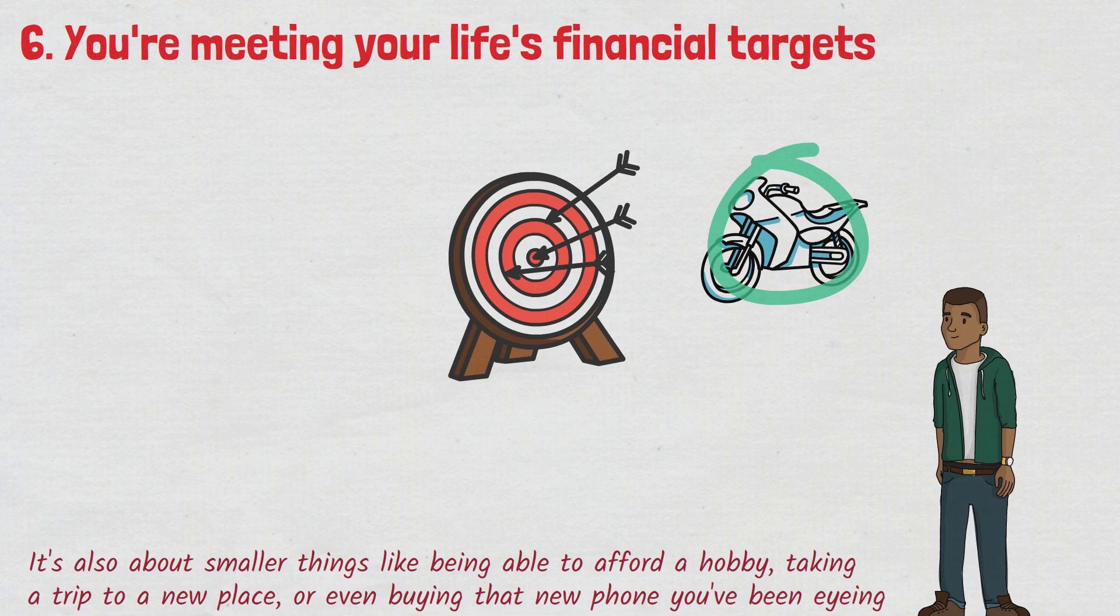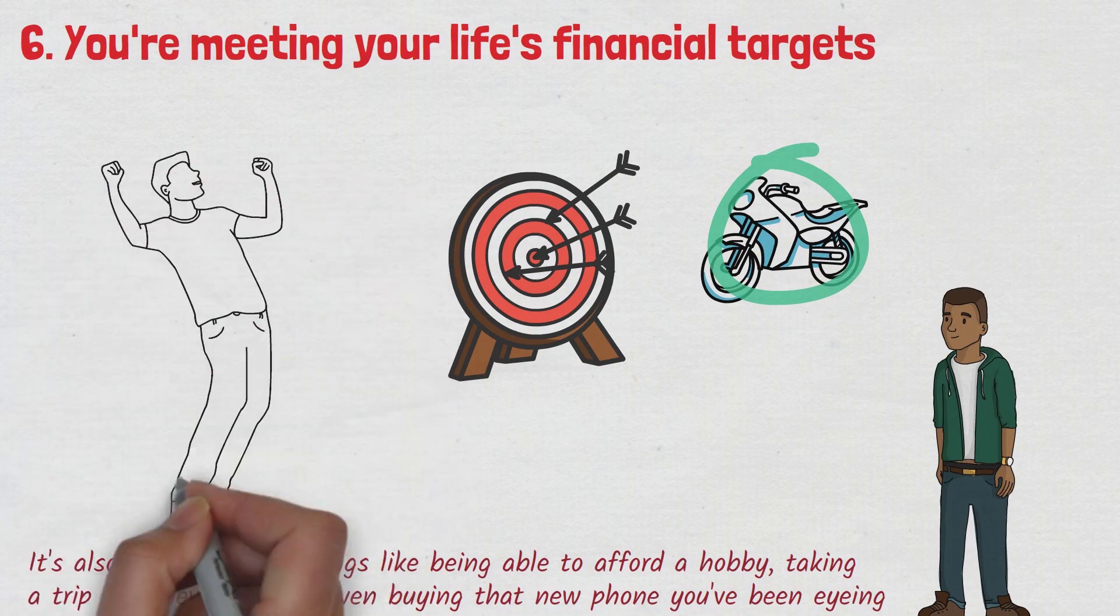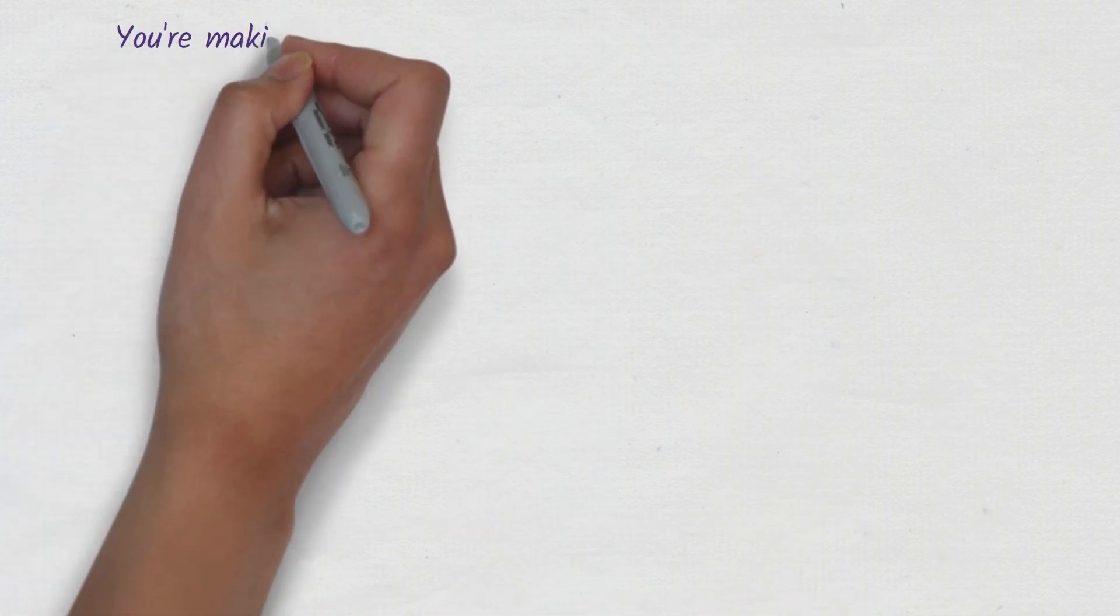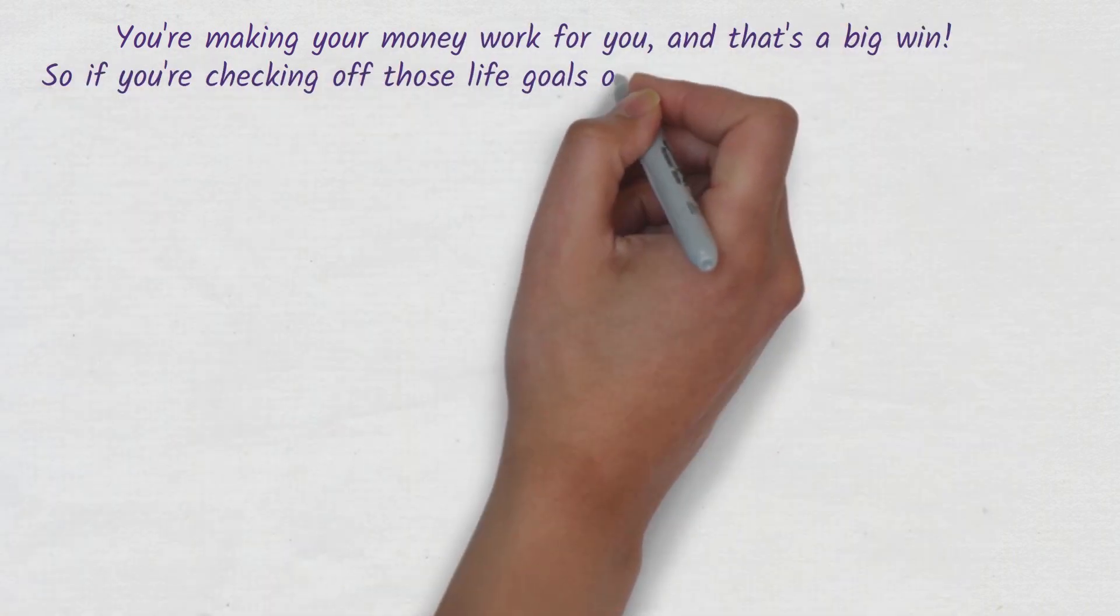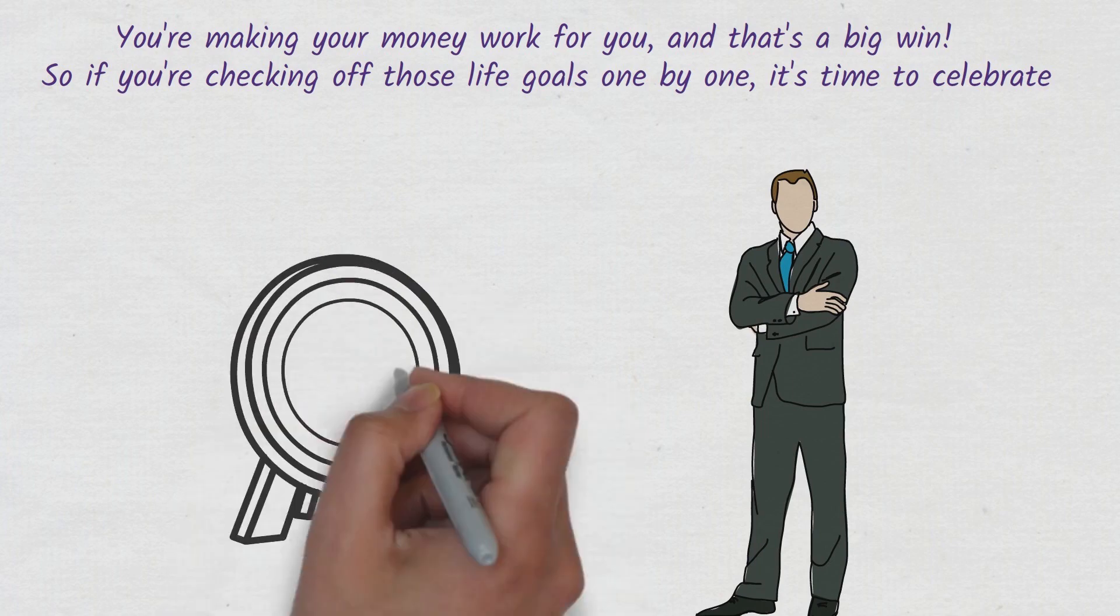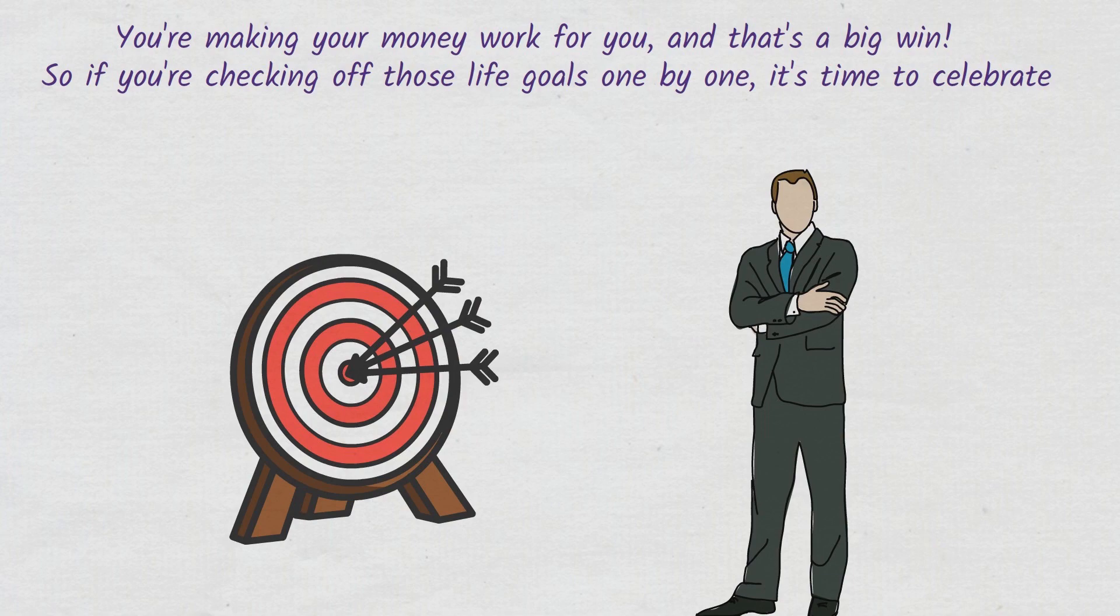These achievements show that you have enough financial stability to afford more than just the bare necessities. Moreover, reaching these life targets is a clear sign that you're not only earning and saving, but also investing your money wisely. You're making your money work for you, and that's a big win. So if you're checking off those life goals one by one, it's time to celebrate. You're doing more than just surviving. You're thriving. Keep on setting those targets, and don't stop until you reach them all. That's the sign of someone who's doing well financially.